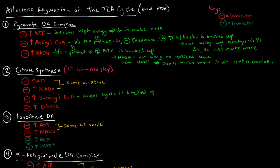High levels of citrate also inhibit citrate synthase. If there's a buildup of citrate, that could indicate the Krebs cycle is backed up — citrate is not moving on further. In addition, citrate is also the product of that reaction. So first, it's the product, and second, high citrate indicates the Krebs cycle is backed up because that citrate is not being converted over.